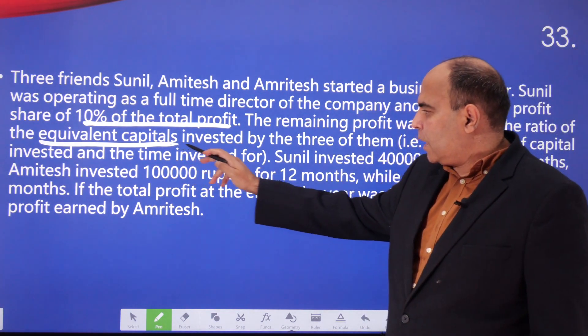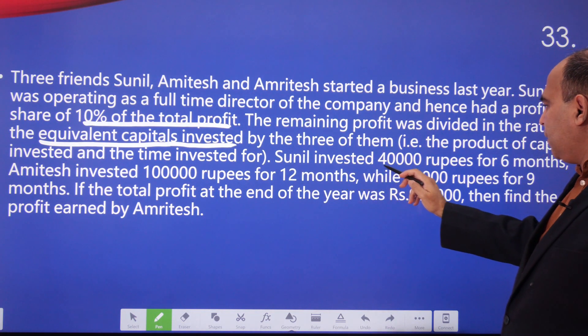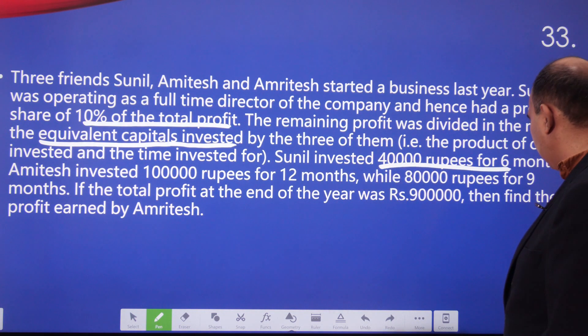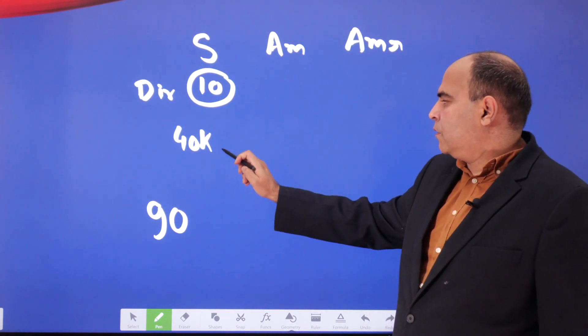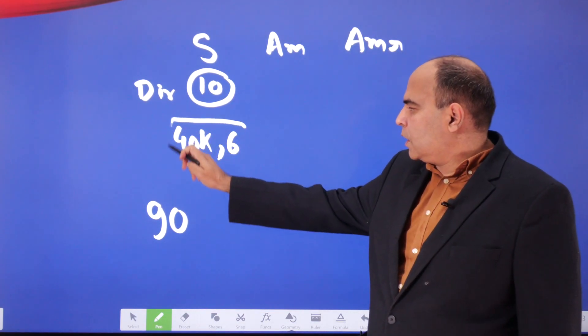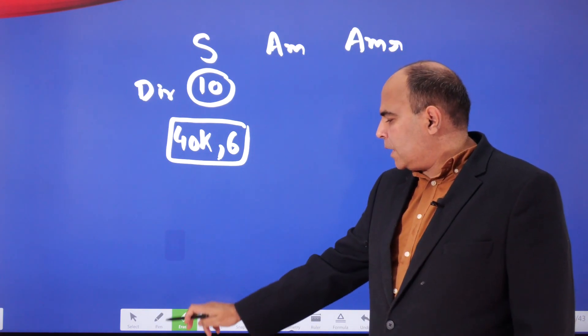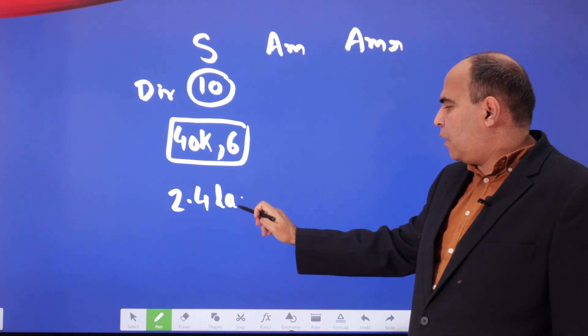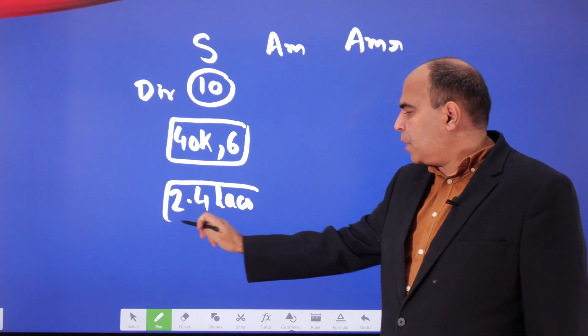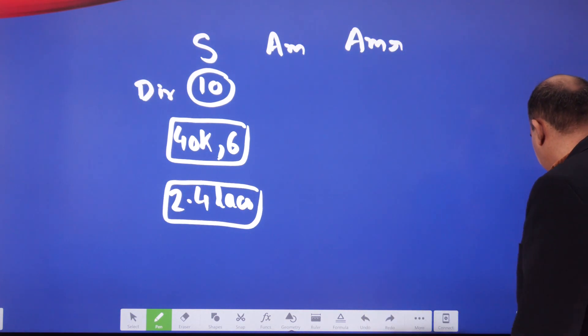Sunil invested 40,000 rupees for six months, so his equivalent capital is 2.4 lakhs if you are considering it for one month.